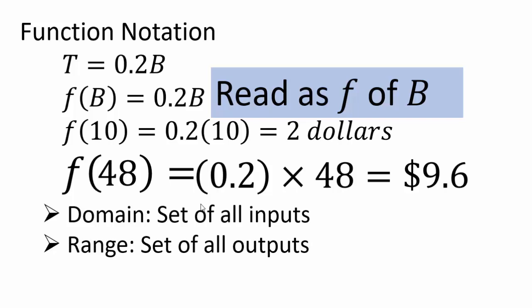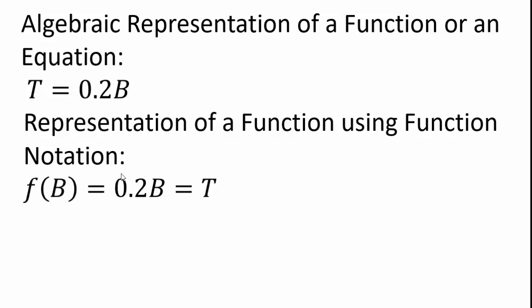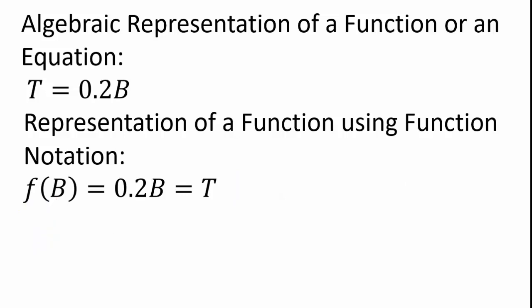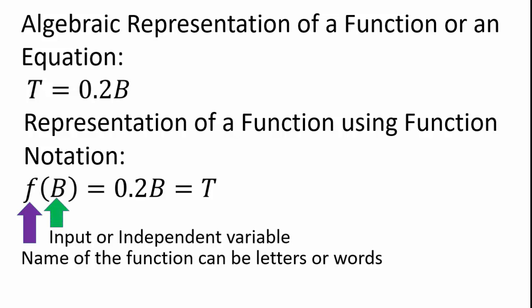We will work more thoroughly on domain and range a little bit later. So algebraic representation of a function can take a form as an equation like we saw before, t equals 0.2b or as function notation, F of b equals t. It's important to cultivate understanding of what each of the component in the function notation represents. That first part here, f is the name of the function. You can use a letter. You can use a word for name of a function. The b is the input or independent variable and the output, the result. The t is the output or f of b. The whole thing when you evaluate it is going to give you the output or the dependent variable. In this case, the t is dependent variable. So let's rehearse again what these things are. F is the name of the function, b represents input or the independent variable, and t represents output or dependent variable.